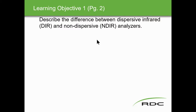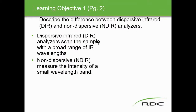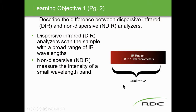Learning objective one: describe the difference between dispersive infrared and non-dispersive. Dispersive analyzers scan the sample with a broad range of IR wavelengths, while non-dispersive analyzers measure the intensity of a small wavelength band. The IR region according to our spectrum is 0.8 to 1000 micrometers.